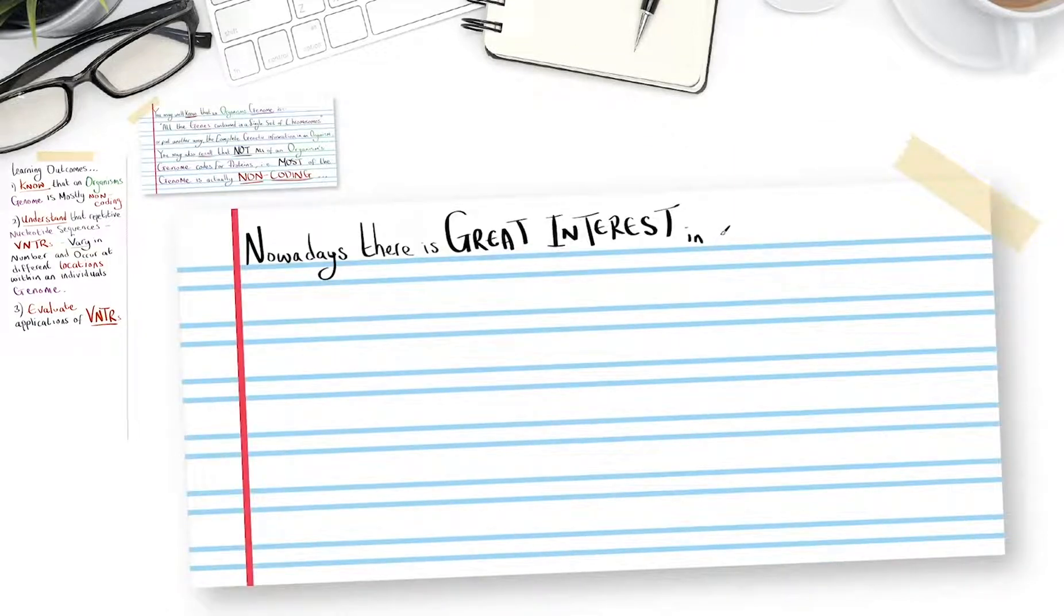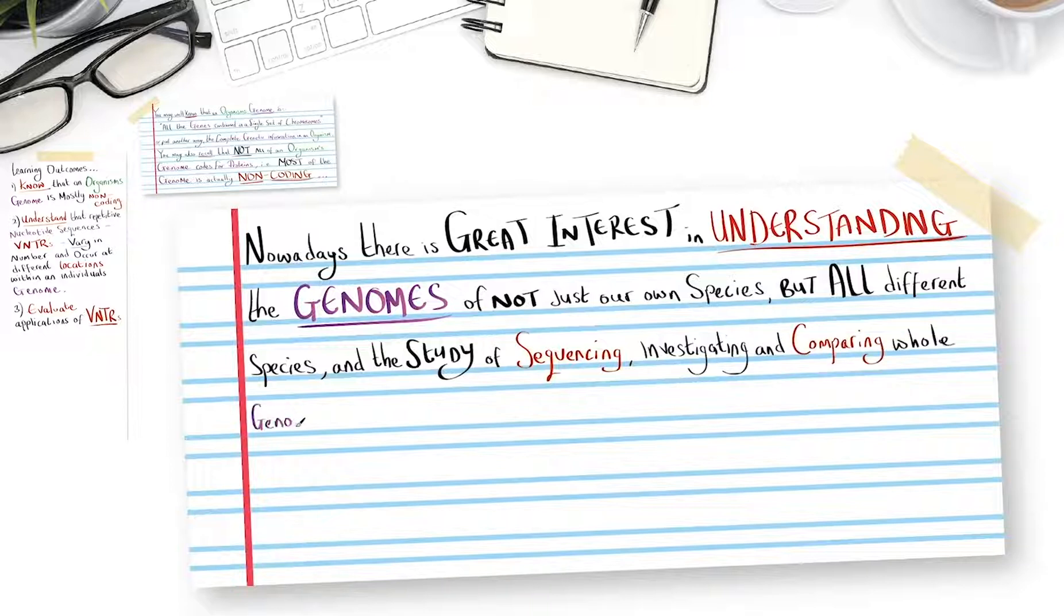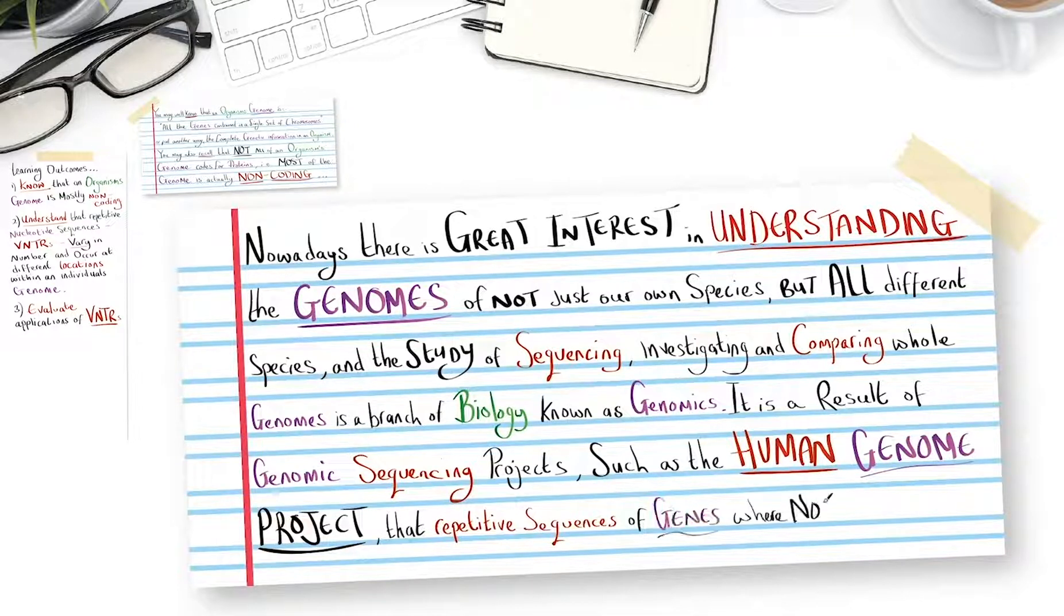Nowadays, there is great interest in understanding the genomes of not just our own species, but of all different species. The study of sequencing, investigating and comparing whole genomes is a branch of biology known as genomics. It is as a result of genomic sequencing projects, such as the Human Genome Project, that repetitive sequences of genes were noticed and identified.